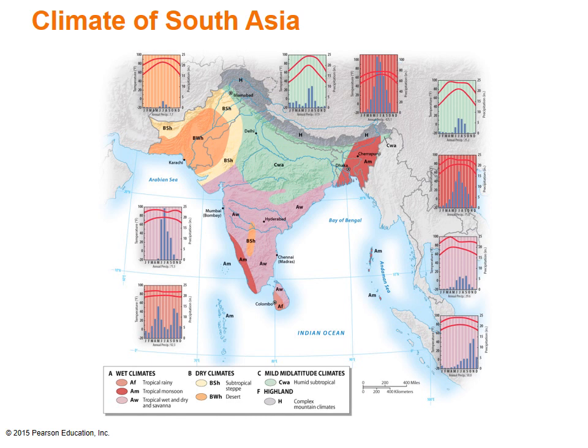This region experiences seasonal rains and heavy monsoon. It is humid in the north, wet in the south, and dry in the west. Temperatures for most of the region are warm year-round with desert conditions in the west. Except for the extensive Himalayas, South Asia is dominated by tropical and subtropical climates. Many of these climates show a distinct summer rainfall season associated with the southwest monsoon, as illustrated by the climographs for Mumbai and Delhi.